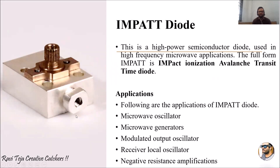The first diode is the IMPATT diode. It is a high power semiconductor diode used in high frequency microwave applications. The full form of IMPATT diode is Impact Ionization Avalanche Transit Time diode. The applications of this diode include microwave oscillators, microwave generators, modulated output oscillators, receiver local oscillators, and negative resistance amplification.